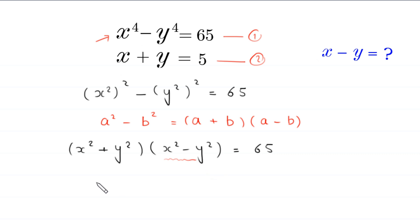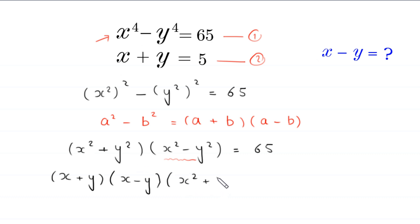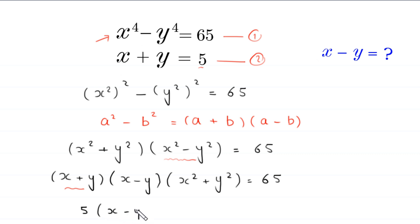Now by using the same algebraic identity, x squared minus y squared becomes (x plus y)(x minus y). So we have (x squared plus y squared) times (x plus y)(x minus y) equals 65. We now replace x plus y with the value 5 from equation 2, giving us 5 times (x minus y) times (x squared plus y squared) equals 65.